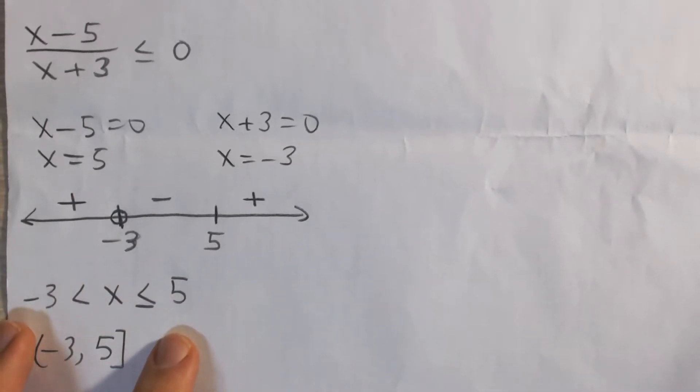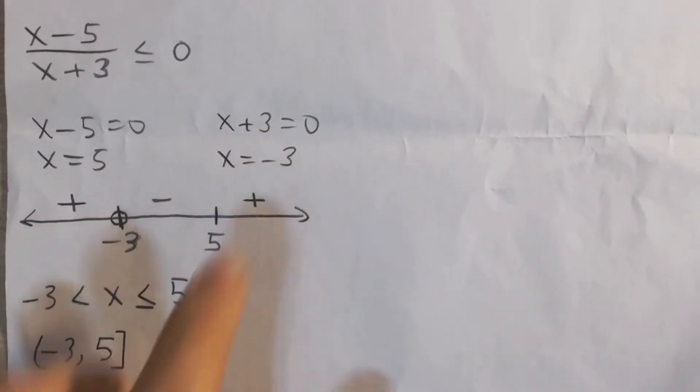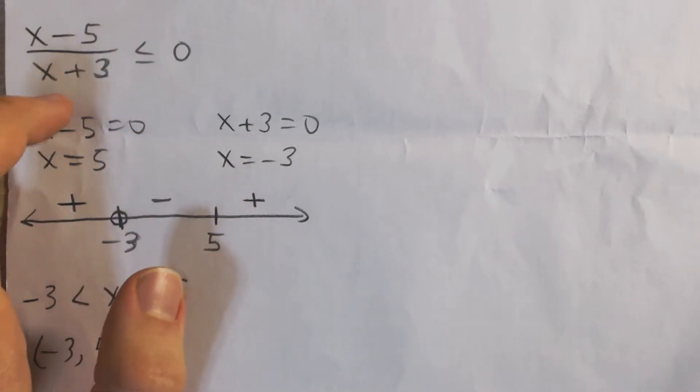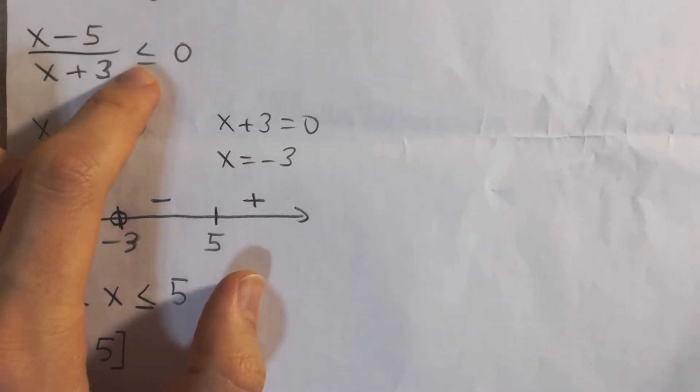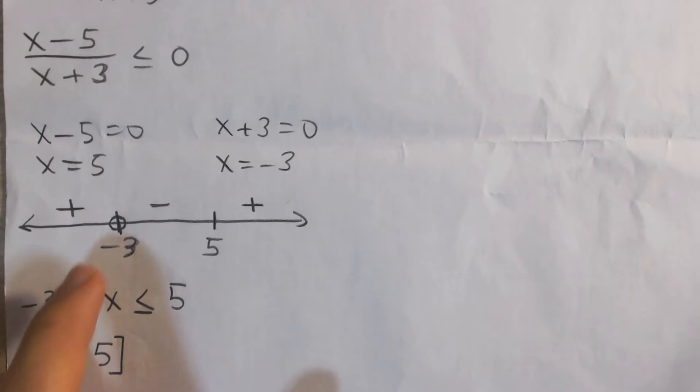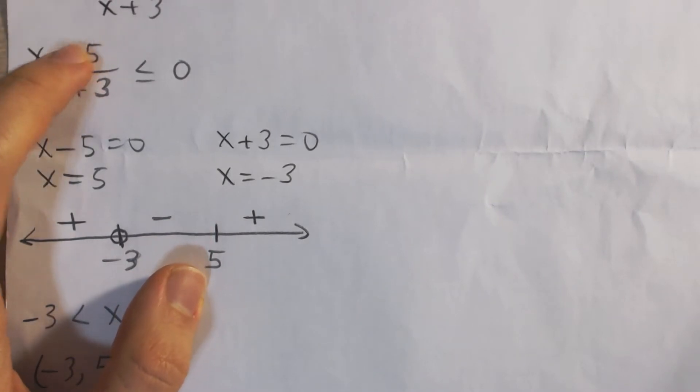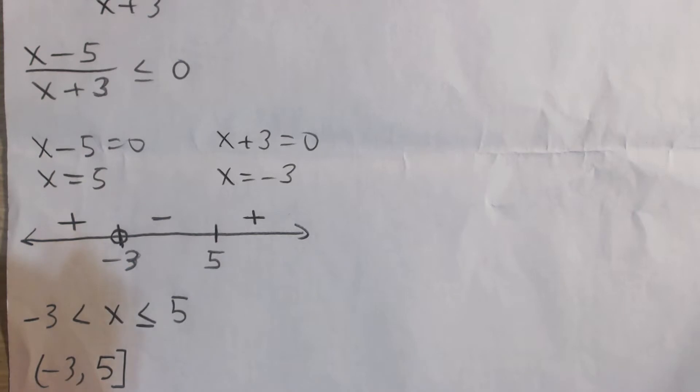And then we're going to use some test values to see whether in each of these three regions our expression is positive or negative. We're trying to find when it's negative or 0. So if we test the point, say negative 10, way to the left of negative 3, we're going to get a negative number, negative 15, and we're going to get another negative number in the denominator. So negative divided by negative is positive, and so we're positive in this region.